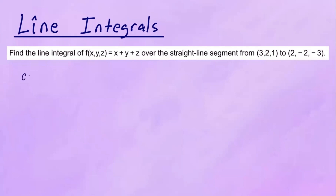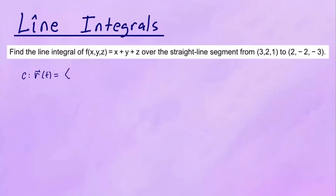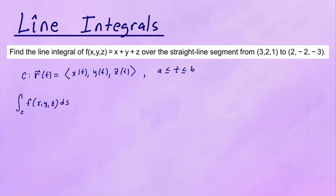Suppose you have some curve C — it could be a plane curve or a space curve. Let's say it is represented by a smooth parametrization R of T, which has three components, so it's a space curve: X of T, Y of T, Z of T, and T ranges from some A to B. Then the integral along the curve C of some function F of X, Y, Z with respect to its arc length — that's how we define a line integral.